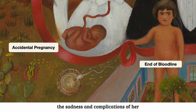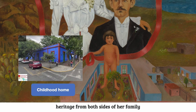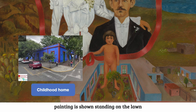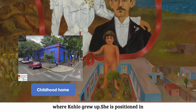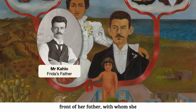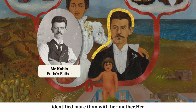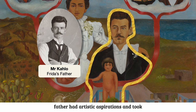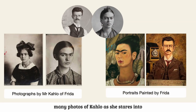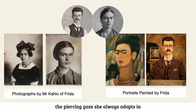Despite the sadness and complications of her family history, Kahlo holds onto her heritage from both sides of her family with great pride. The girl in the painting is shown standing on the lawn of a blue building, representing the home where Kahlo grew up. She is positioned in front of her father, with whom she identified more than with her mother. Her father had artistic aspirations and took many photos of Kahlo as she stares into the camera, which could have influenced the piercing gaze she always adopts in her portraits.